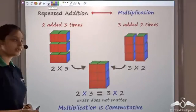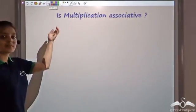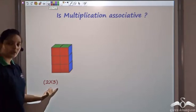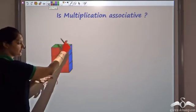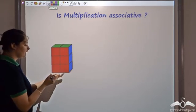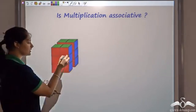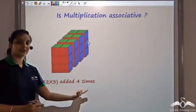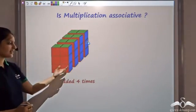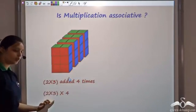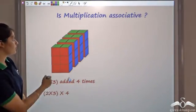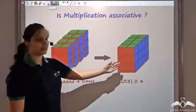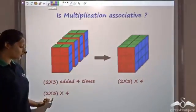Now let's see whether multiplication is associative. Starting with 2 into 3 — 2 blocks added 3 times — I then add this entire block 4 times, giving me 2 into 3 into 4. If I stack all of these together, I get one large block representing 2 into 3 into 4.